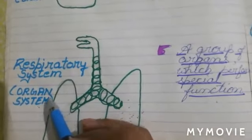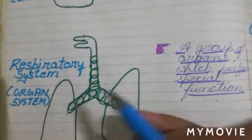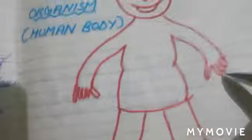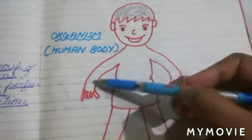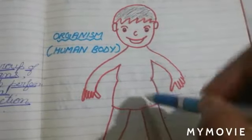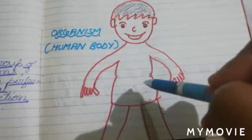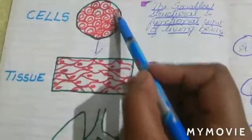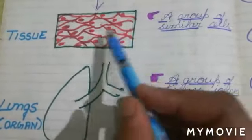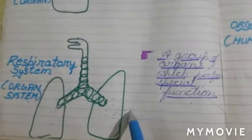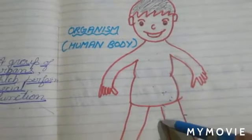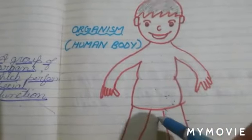Many such organ systems are there — this is not the only one. Many other organ systems join together to form an organism, that is our human body. To perform our functions properly, it is very important that all organ systems work and function well. So, to recap: our body is made up of millions and millions of cells; cells of similar types join together to form a tissue; tissues join together to form an organ; organs join together to form an organ system; and many such organ systems join together to form a human body — which means an organism.